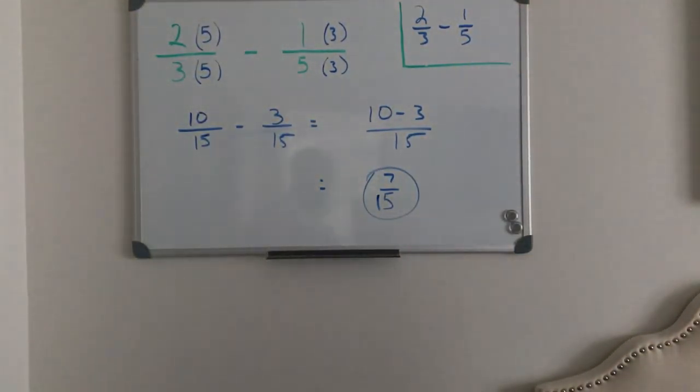And 10 minus three is seven, so now you have seven-fifteenths, not seven-fifths. Sorry about that. All right, cool.